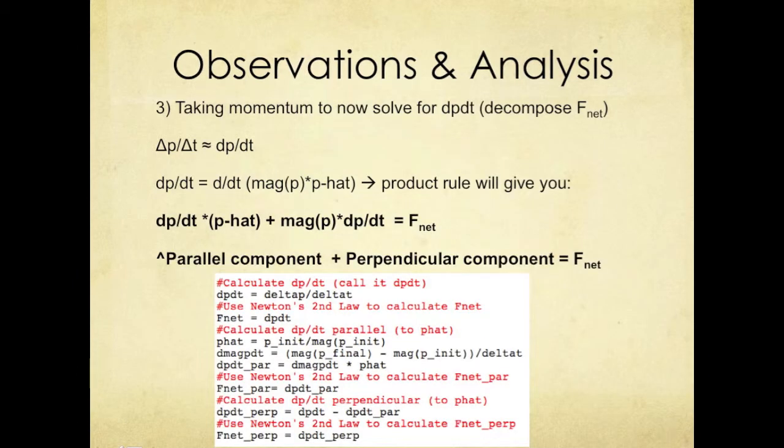dp/dt helps us to decompose the net force along with the aid of some calculus. Using the product rule, we are able to break dp/dt down to dp/dt times p hat, which correlates with our parallel component, and dp/dt times the magnitude of p dp hat, which will be our perpendicular component.